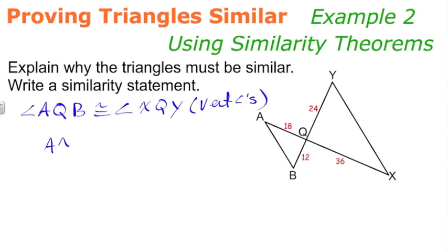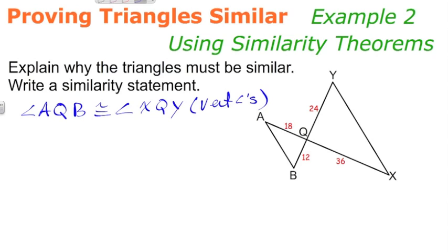Excuse me, I'm fumbling all over my words here. This would be XQ, AQ corresponds to XQ. And then on the other side of that proportion, we should have BQ in the numerator, and then YQ in the denominator.